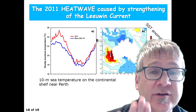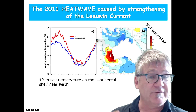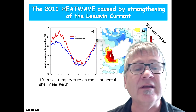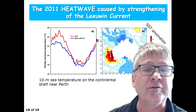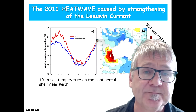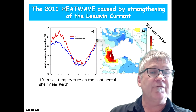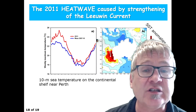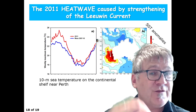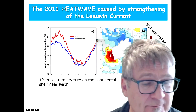Satellites only show the surface. But from the previous slide, the Lewin current actually extends to a water depth of 100 meters. So the warming of the heat wave actually extends the entire thickness of the Lewin current — about 100 meters or so.